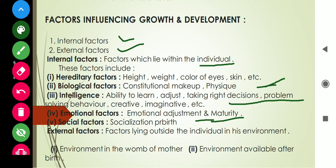Next come the external factors. External factors are those lying outside the individual, in the environment. These are divided into two major parts. The first is the environment in the womb of the mother — during that period, the child gets nutrition from the food the mother eats.